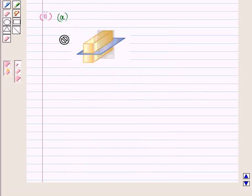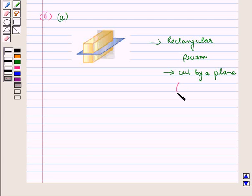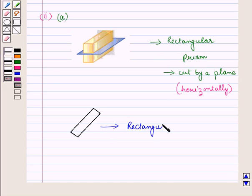Let us start with the second part. In the A sub-part, we are given a rectangular prism which is cut by a plane horizontally. When we cut this rectangular prism horizontally by a plane, we get the rectangular cross section.